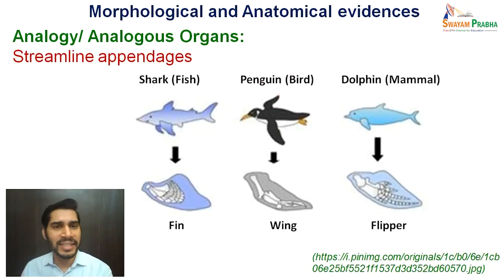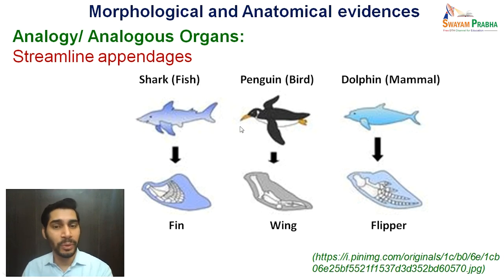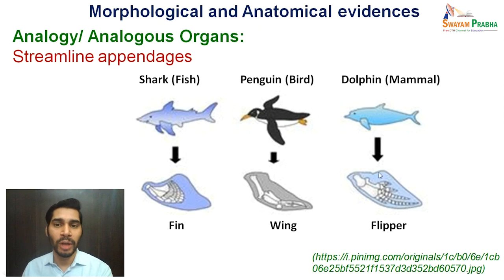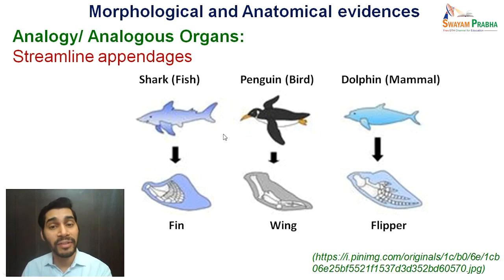Yet another example is streamlined appendages in different organisms belonging to different vertebrate classes. A shark from fishes, a penguin from birds, and a dolphin from mammals — sharks possess fins, penguins possess wings, dolphins possess flippers. Structurally all three are very different, but they perform a similar function: they are streamlined appendages which help in movement. So they are also evidence of evolution.